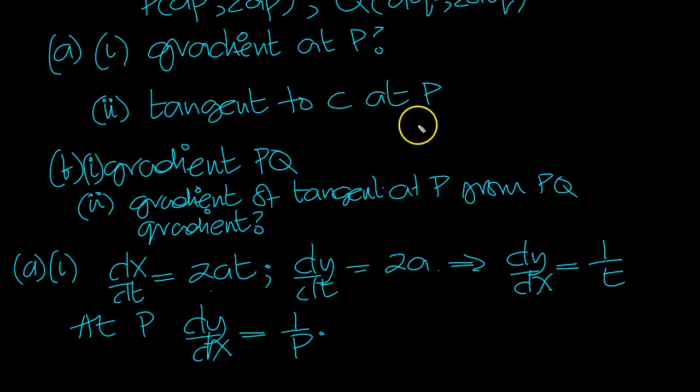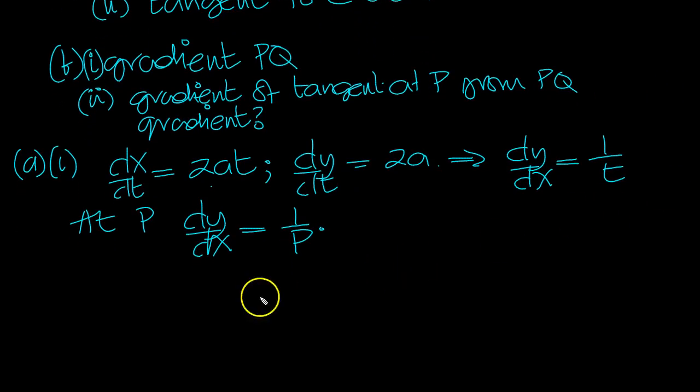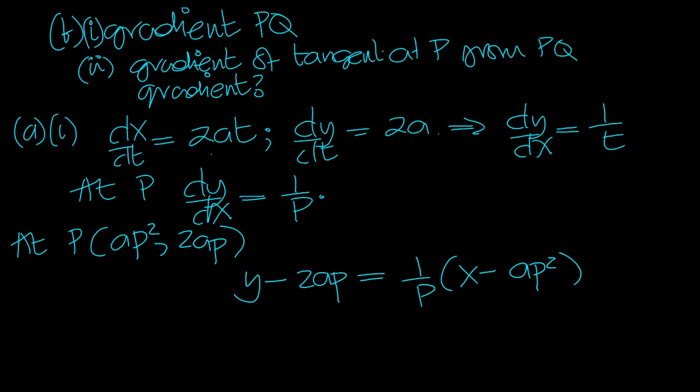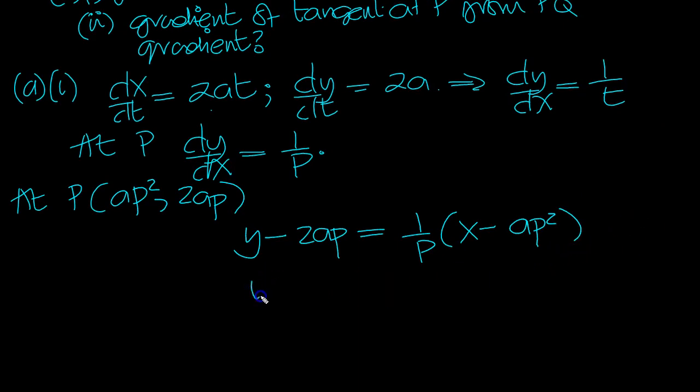So that's part 1. Tangent to C at P, the equation of the tangent then. So, at P, which is aP squared, 2aP, y minus 2aP is equal to the gradient times x minus aP squared. Right, so y is equal to 1 over P times x minus aP squared plus 2aP. That's the equation of the tangent at P.